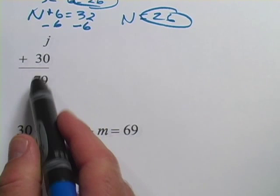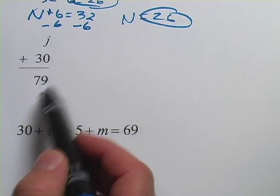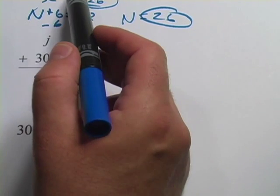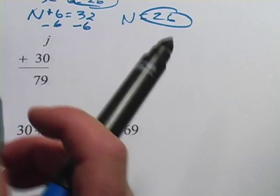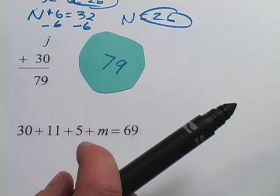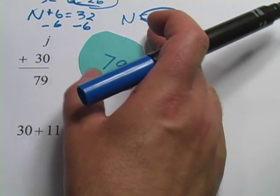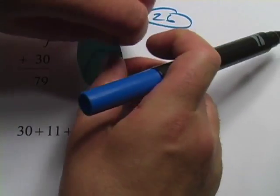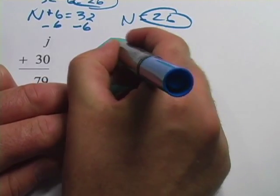In this one, we have j + 30 = 79. It's really just written in a different way. It's pretty much similar to the last equation. So the total number here is 79. That 79, that pie of 79, is split into two parts, j and, oops, I forgot to write it in here, 30.